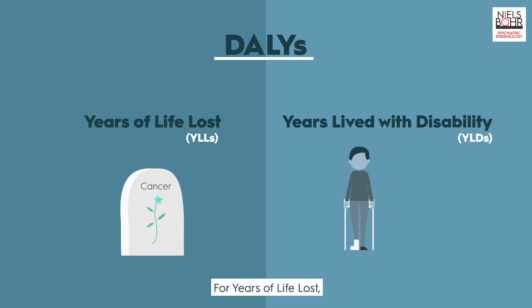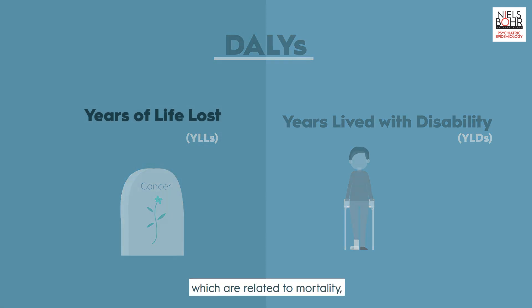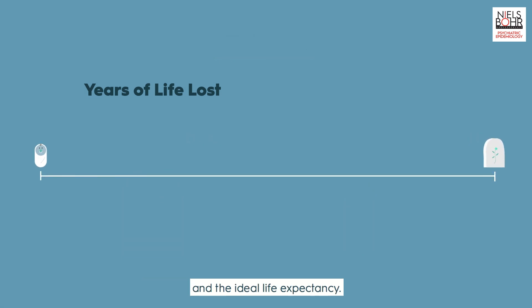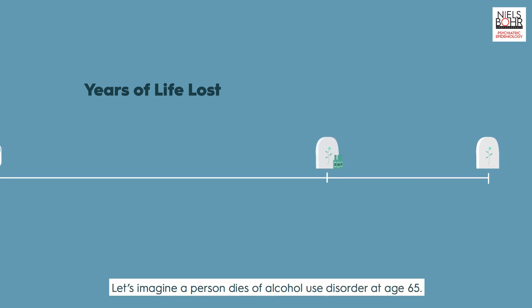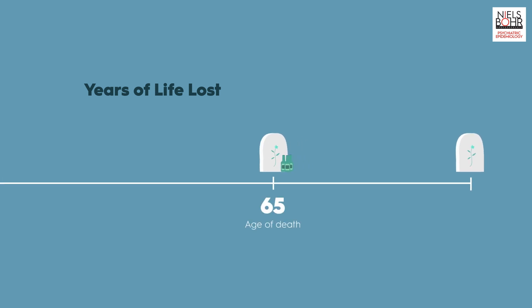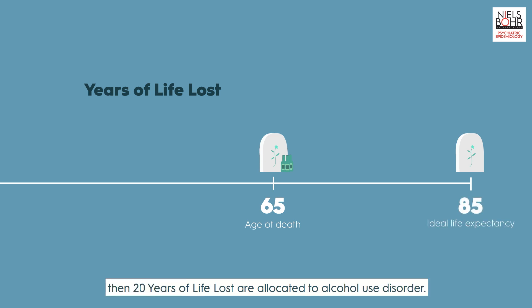For years of life lost, which are related to mortality, we calculate the gap between the age at death and the ideal life expectancy. Let's imagine a person dies of alcohol use disorder at age 65. If the ideal life expectancy is 85, then 20 years of life lost are allocated to alcohol use disorder.